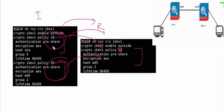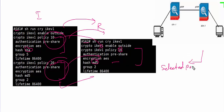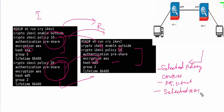Does the first one match? It doesn't, because here the hash is MD5 and on the other side it is SHA. Does the second one match? Yes — policy 20 matches with policy 10 configured on the responder end. So while sending the second packet, the responder sends only the selected policy, along with the responder cookies, DOI, situation, and the selected NAT-T parameters.